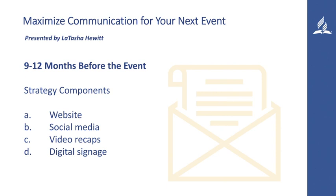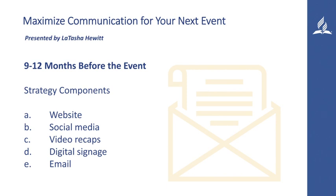D, digital signage. This is very crucial while the event is taking place. People can learn updates as they happen or information about where to go for various activities during the event. E, email. If you have an e-newsletter, this is a great time to have a special edition about your event, giving attendees as much information as they need before they arrive or even while they're there.